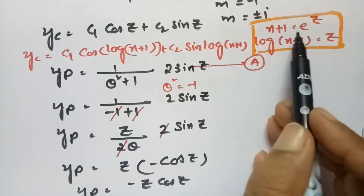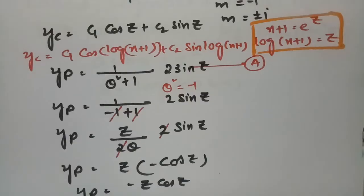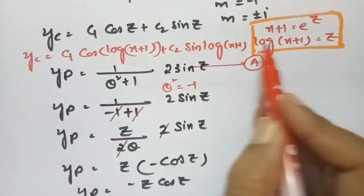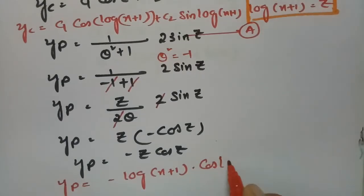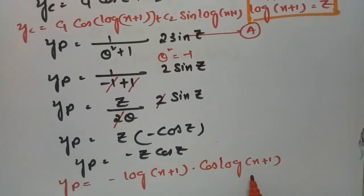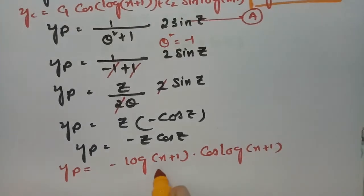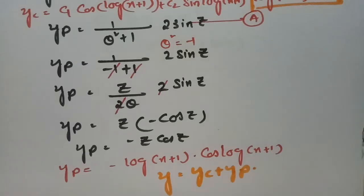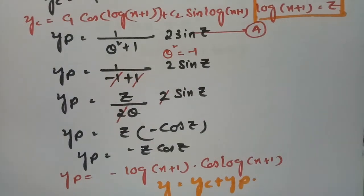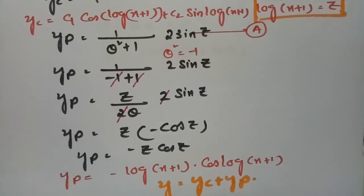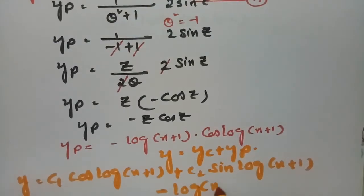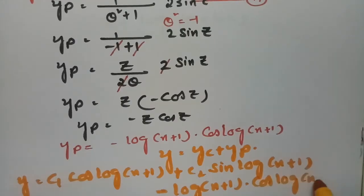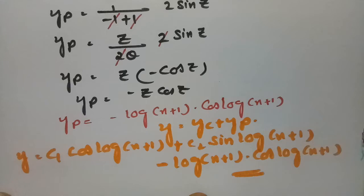For sin z, the derivative is cos z, so y_p = -z·cos z. Now back substitution: in place of z we write log(x + 1), so y_p = -log(x + 1)·cos(log(x + 1)). The general solution y = y_c + y_p gives: y = c₁·cos(log(x + 1)) + c₂·sin(log(x + 1)) - log(x + 1)·cos(log(x + 1)). This is the final answer.